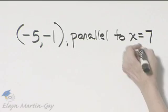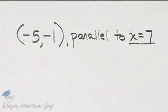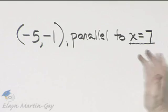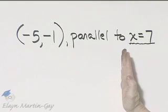Now remember what kind of line this is. X is equal to some constant, that's always a vertical line.